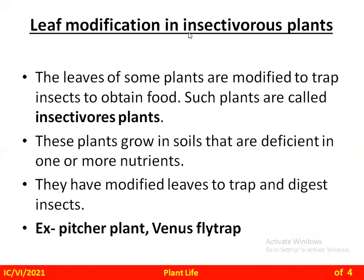The next modification is leaf modification in insectivorous plants. The leaves of some plants are modified to trap insects to obtain food; such plants are called insectivorous plants. These plants grow in soil that is deficient in one or more nutrients. The leaves are modified to trap and digest insects. Examples of insectivorous plants are the pitcher plant and Venus fly trap.